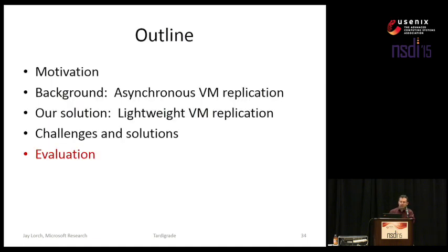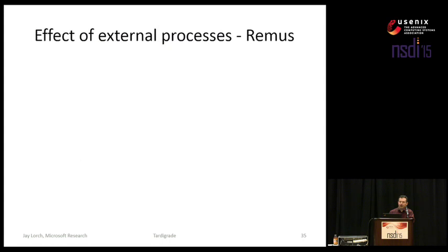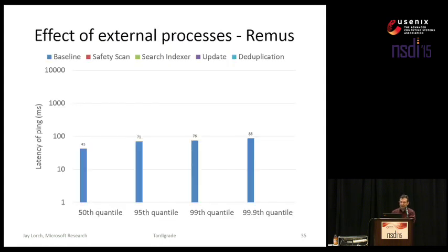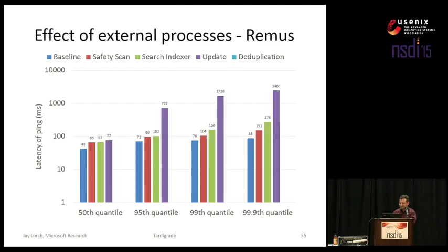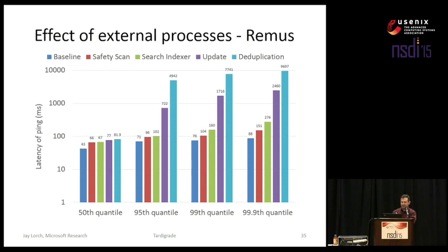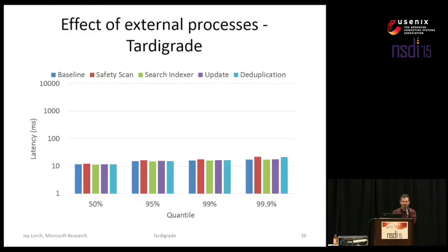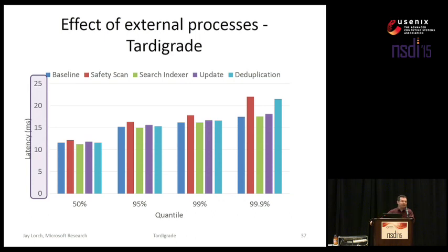Now let's look at some performance results. Remember the earlier slide about Remus and ping latency — about 43 milliseconds baseline, increasing to multiple seconds as external processes are added. If we run this experiment in tardigrade and rescale to a linear scale, we find the baseline latency is lower — only about 12 milliseconds. Most importantly, the effect of external processes is practically invisible. After all, the virus scanner or Windows Update runs externally to the lightweight virtual machine, so we don't have to capture any mutations it makes to its state and send those to the backup.